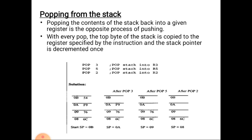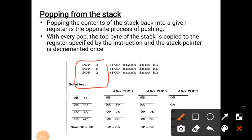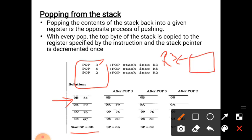The pop operation is the opposite of push — it retrieves content from the top of the stack and restores it into a CPU register. With every pop, the top byte of the stack is copied to the register specified by the instruction, and the stack pointer is decremented by 1. Here the instructions are POP 3, POP 5, and POP 2. The stack pointer is currently at 0AH. POP 3 means register R3 — the top of the stack element is 54H, so 54H is stored into R3.